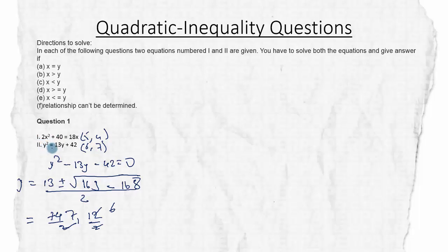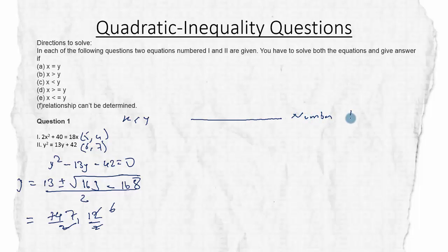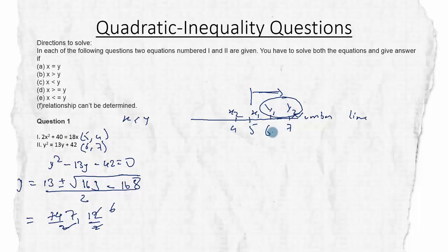Now we need to relate X and Y. People are tempted to relate them visually, but I suggest using a number line to avoid confusion. X values are 4 and 5; Y values are 6 and 7. Plotting on the number line, we can see all Y values are to the right of all X values, meaning Y is greater than X. This is our answer. The number line also helps when the relationship cannot be determined.